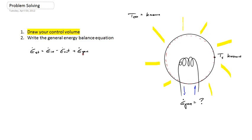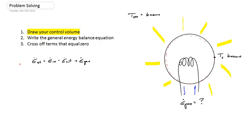After writing the general energy balance equation, step three is to cross off the zero terms. This is a steady-state problem, so the rate of energy stored is zero. There's no thermal energy coming into the system — electrical energy crosses the walls as generation, but no thermal energy enters. So E_stored and E_in are both zero, leaving us with E_gen, which we want to find, equal to E_out — the energy leaving the system by convection.